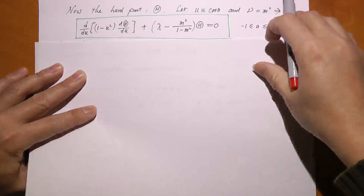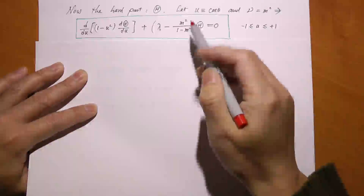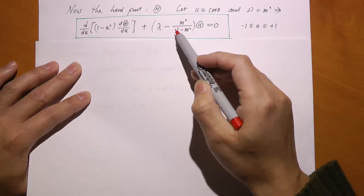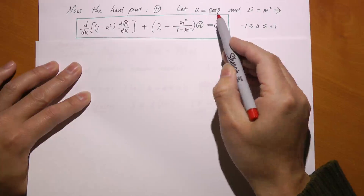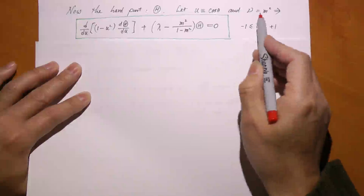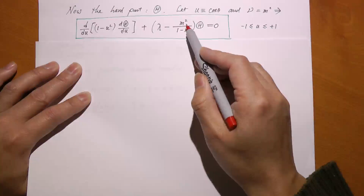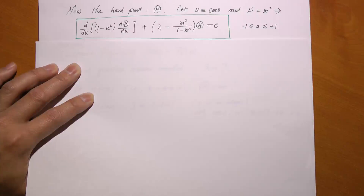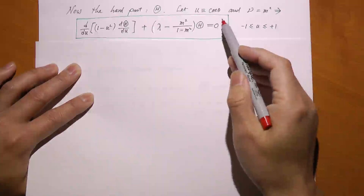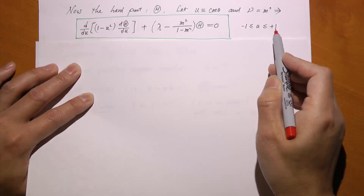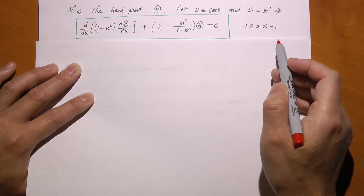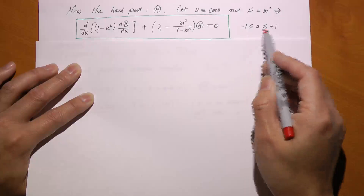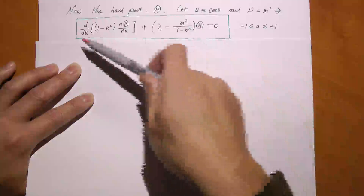For the next equation, it's not nearly as easy as the first one. Generally, the way we solve that is to simplify the equation by introducing a new variable u, defined as cosine theta, and nu equals m squared. So I replace nu with m squared. Lambda — I still don't know what it is. The argument u, which is cosine theta, can range between negative one and positive one, as theta goes from zero to pi.